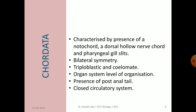Now it is about Chordata. Chordates are characterized by presence of a notochord, a dorsal hollow nerve cord and pharyngeal gill slits. Chordates are also bilateral, triploblastic and coelomate. They have organ system level of organization. There is presence of a post-anal tail and circulatory system is closed.